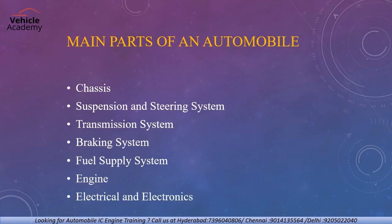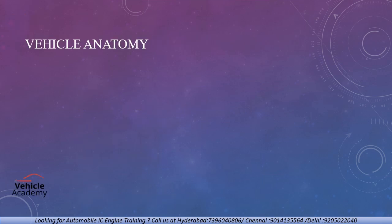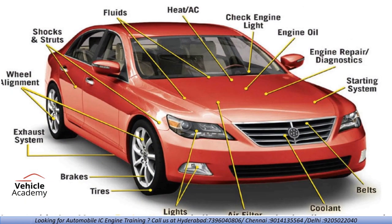Electrical and electronic devices are also key parts. We'll be discussing all these main parts — chassis, suspension, steering, transmission, braking, fuel supply, engine, and electrical and electronic parts — in detail in the next video. After that, I'll show you the vehicle anatomy, where you can see exactly which parts are located in which particular position in the car. Thank you for watching the video.